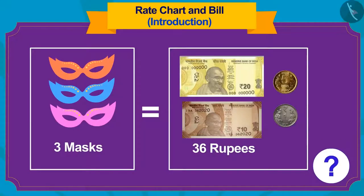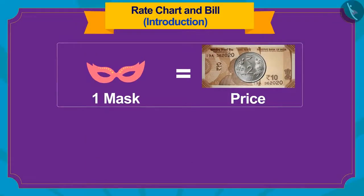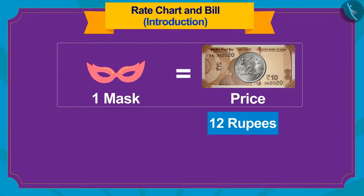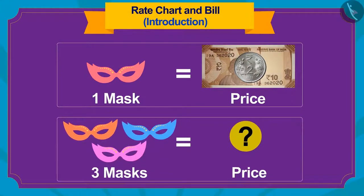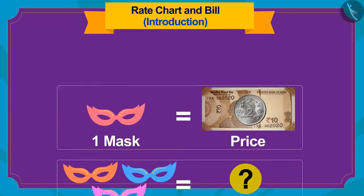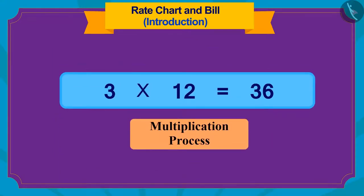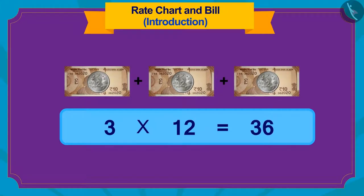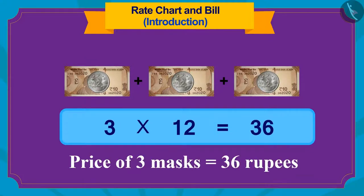Children, do you know how Banni found this out? The price of one mask is 12 rupees. If we want to know the cost of three masks, we use the process of multiplication. 3 times 12 is 36. In this way, the cost of three masks becomes 36 rupees.